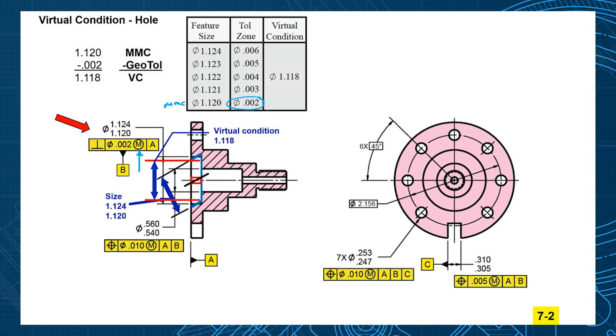So at 1 inch 121 you get 3 and bigger 4, 5, 6. But notice that our smallest hole minus 2 ends up virtual condition 1 inch 118. 1 inch 121 minus 3 gives you your virtual condition. This minus this virtual condition. This minus this virtual condition.